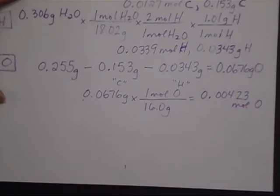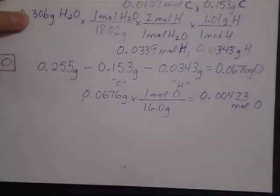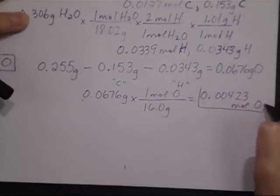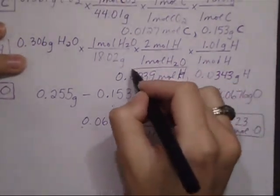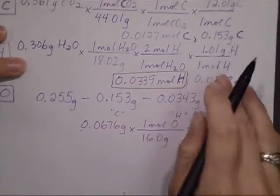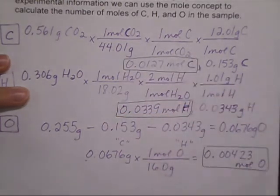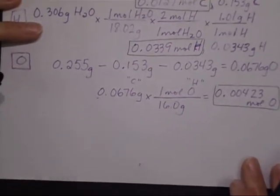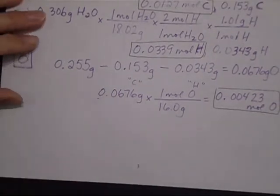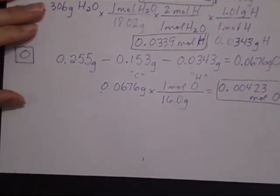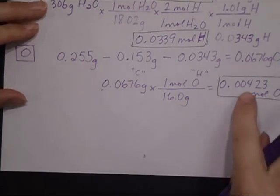So now I have all of my moles. I have moles of O, I have moles of H, and I have moles of C. So the next step that I need to deal with is I need to divide them all by whichever has the smallest number of moles to make the most reduced ratio. In this case, that's going to be the oxygen.